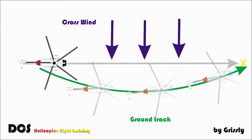If you fly longer distances and you have visual references like a mountain top or a city, you will automatically correct your course for crosswind influences. But you will not fly the direct or shortest way to your destination — it will be something like a half curve, much longer, taking more time, and requiring more fuel.